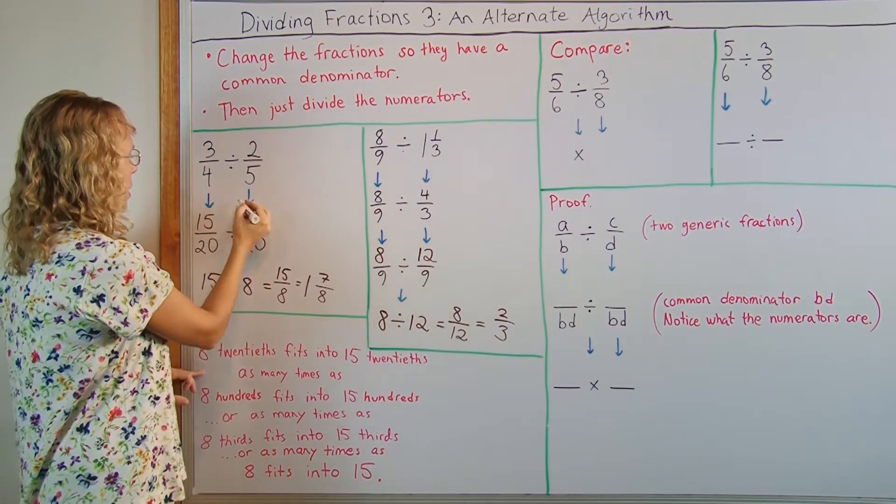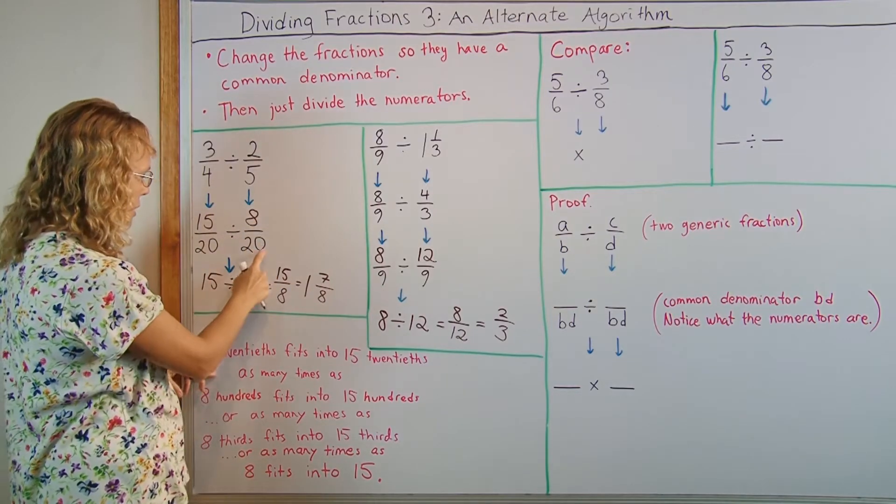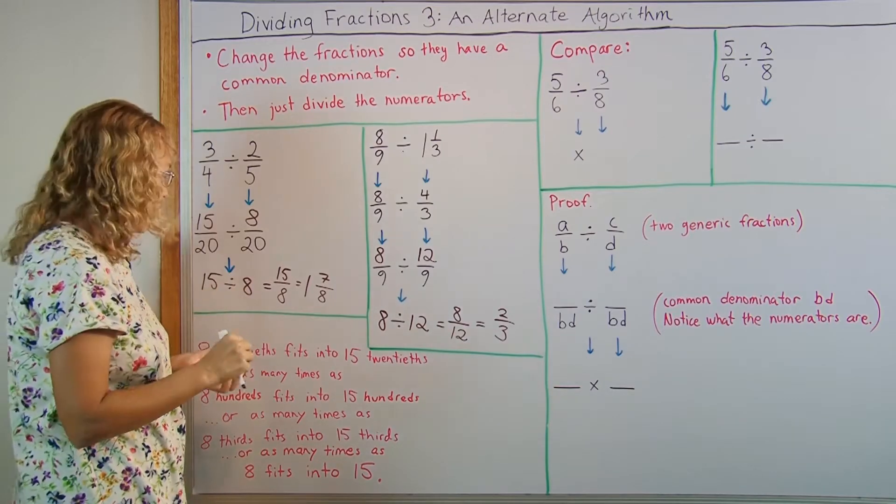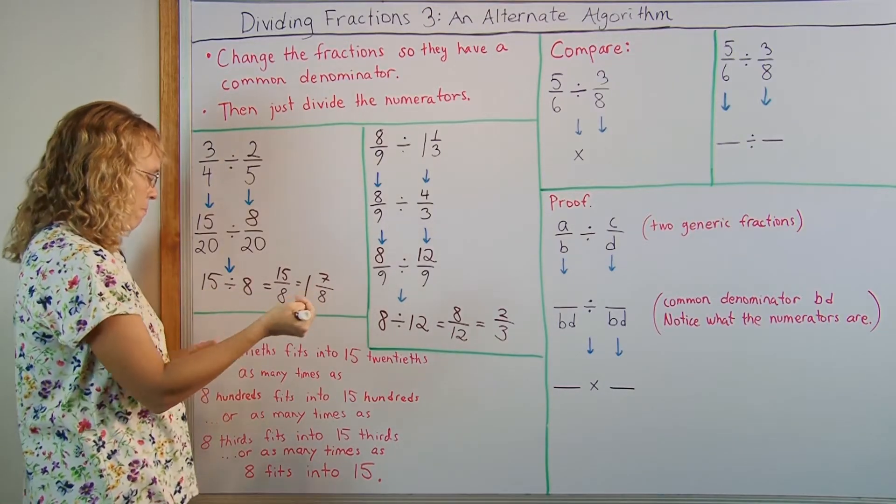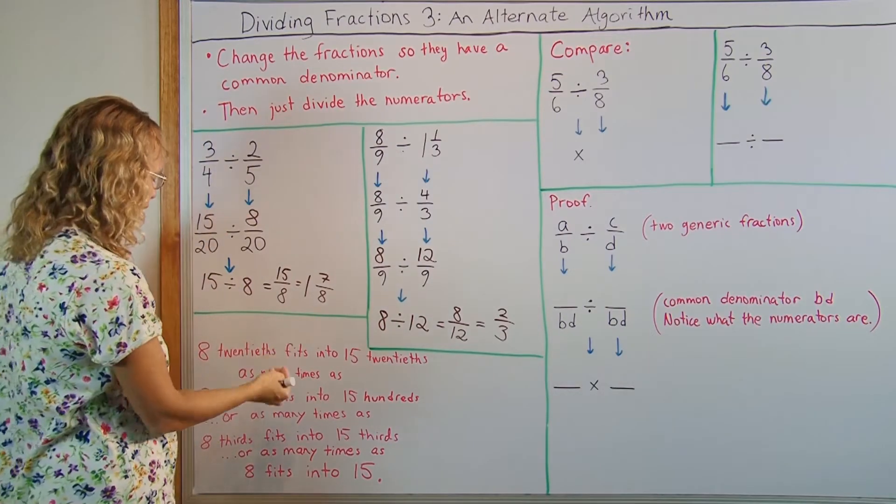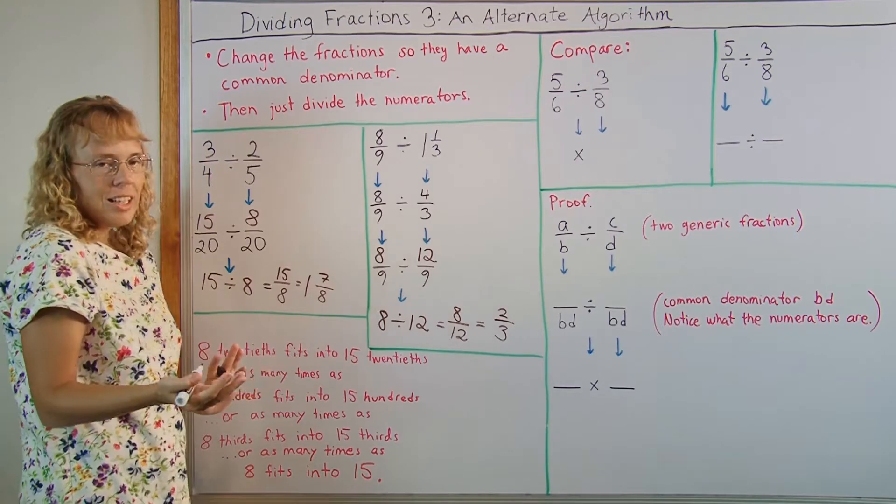My original problem here, this one here. 15 20ths divided by 8 20ths. 8 20ths here fits into 15 20ths as many times as 8 bananas would fit into 15 bananas. Or as many times as 8 hundreds would fit into 15 hundredths or anything else.